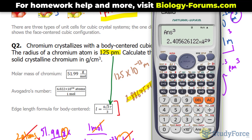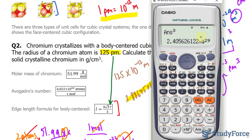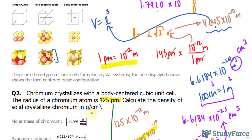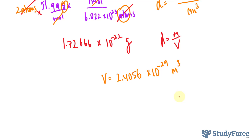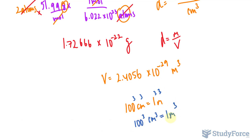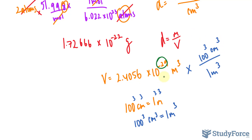Cubing the edge length gives a volume of 2.4056×10⁻²⁹ meters cubed. Since the answer needs to be in centimeters cubed, we apply the conversion: 100 cm = 1 m, so 100³ cm³ = 1 m³. Multiplying by this conversion reduces our power from −29 to −23, giving a volume of 2.4056×10⁻²³ centimeters cubed.